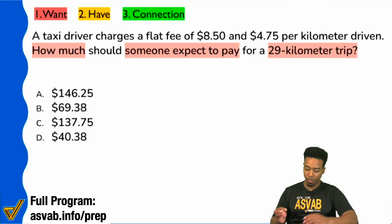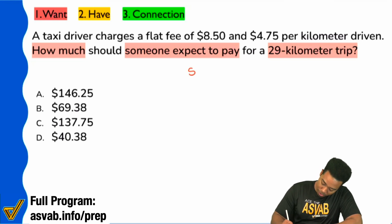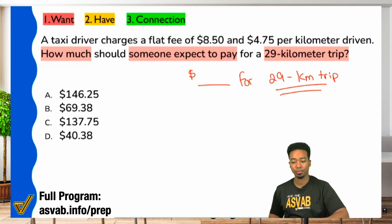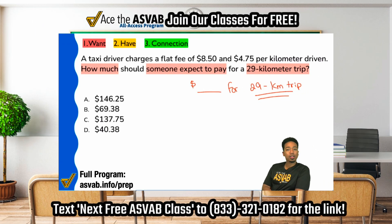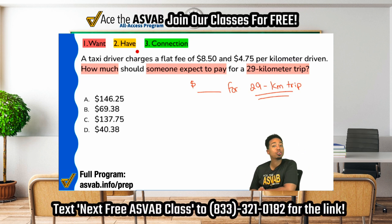Sounds good. So we'll say blank money for the 29 kilometer trip. Sounds good, and that's going to be important information too. So on this 29 kilometer trip, we see that this is what it entails. We see the taxi driver charges a flat fee of $8.50 and then $4.75 per kilometer driven.